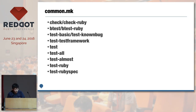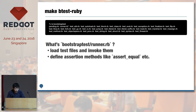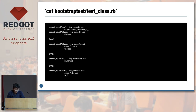The entry point of the make command is the file named CommonMK. This file contains these tasks. The main task is the make test command. This task builds btest, Ruby test basic, and test all. btest means bootstraptest. This test confirms the simple syntax of Ruby — for example, this assertion confirms that the class method returns the class storing a variable.